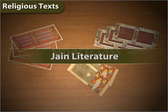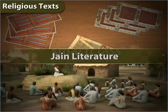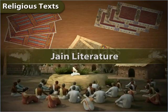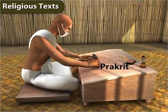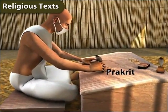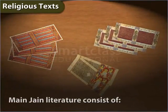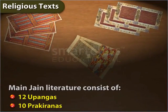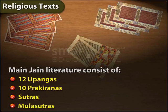Jain literature also gives us information about the contemporary religious, economic, political and social life of the people. Jain literature was mainly written in Prakrit, though it has also been written in local languages. The main Jain literature consists of 12 Upangas, 10 Prakiranas, Sutras and Moola Sutras.